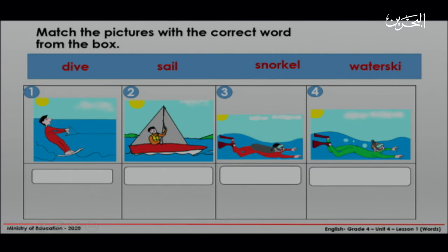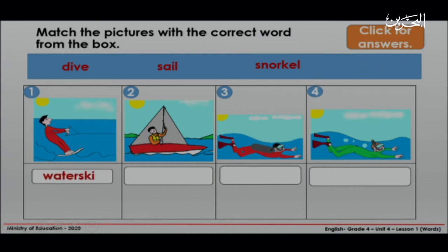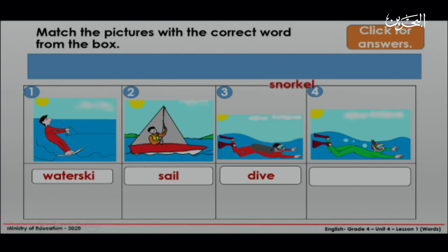Let's see number one. Which one did you choose? Is it dive? No. Is it sail? No. Is it snorkel? No. Is it waterski? Yes, it is. Good, it's waterski. Let's see number two — well done, it's sail. What about number three? Is it dive or snorkel? Excellent, it's dive. What about the last one? Picture number four — of course, it's snorkel.